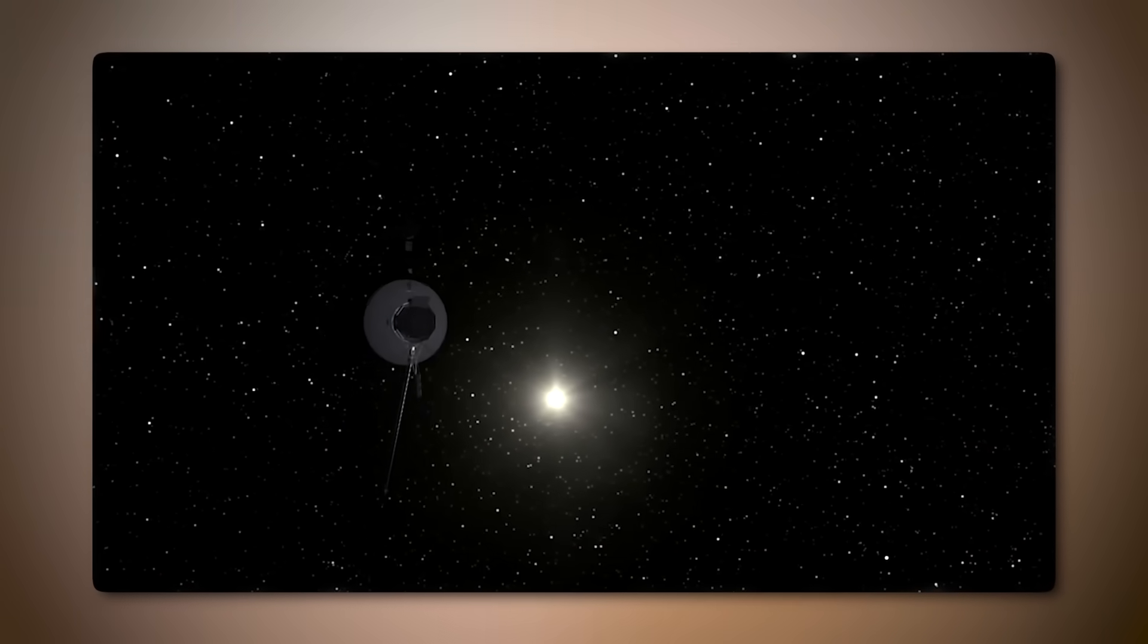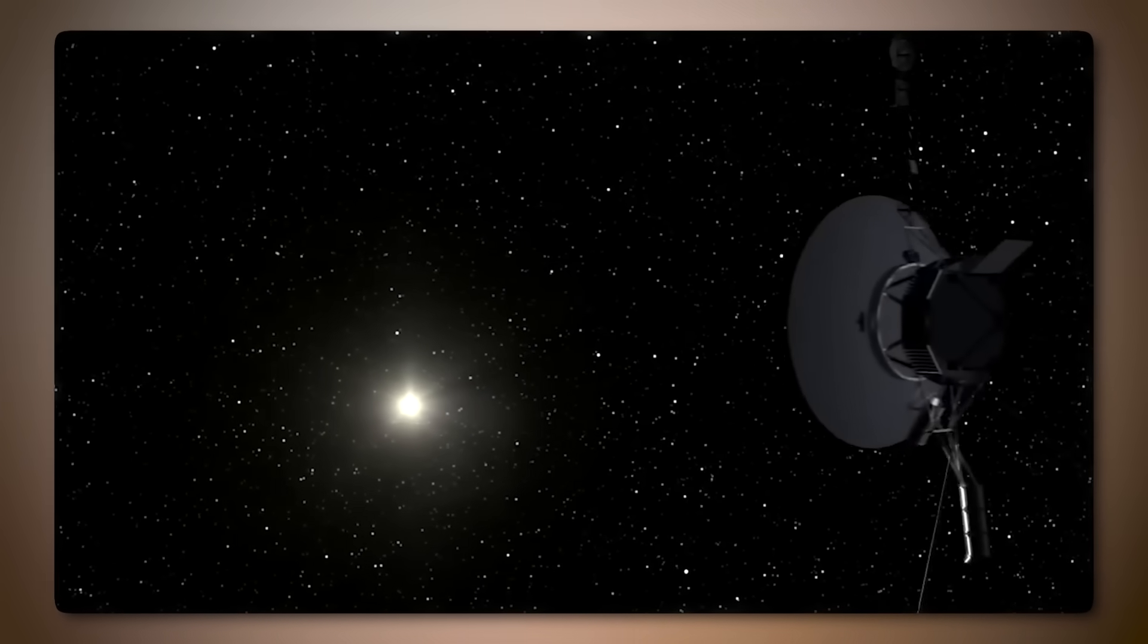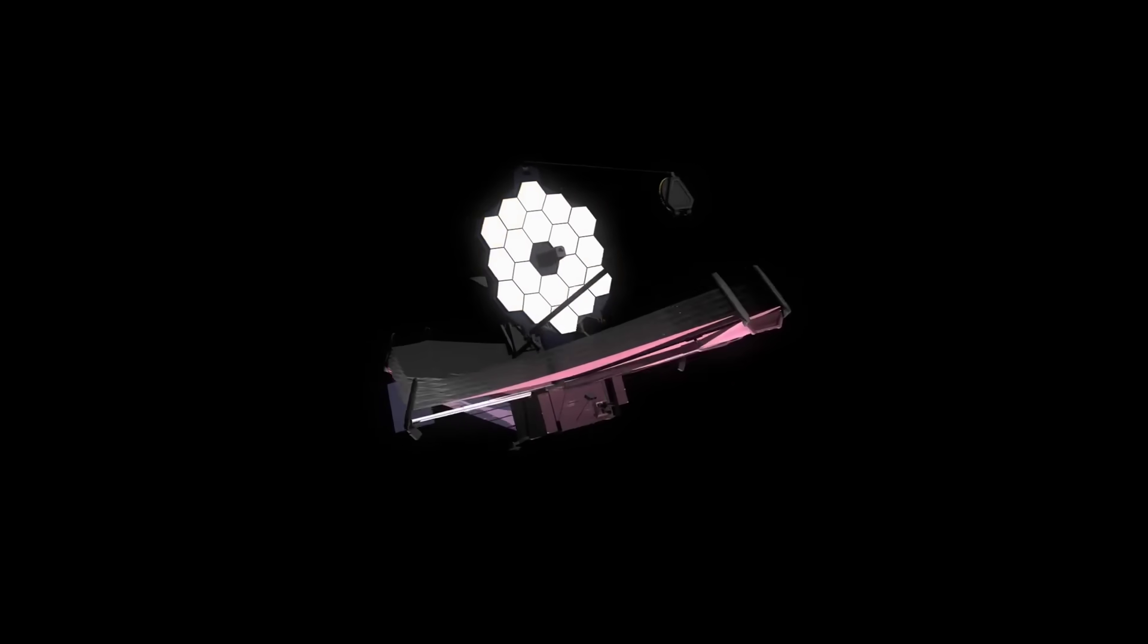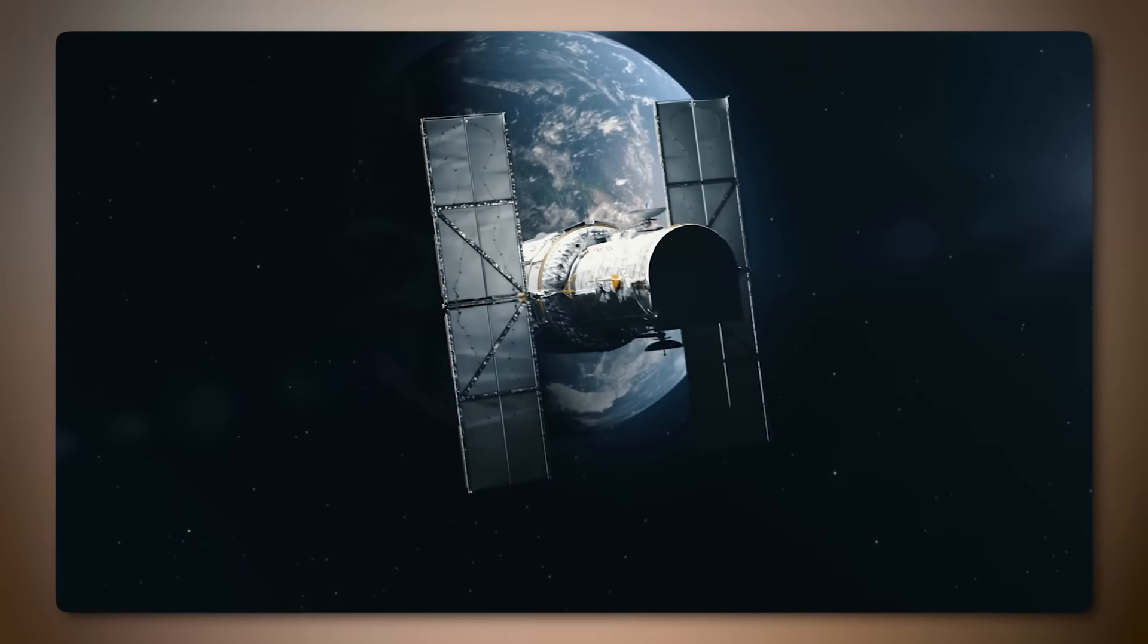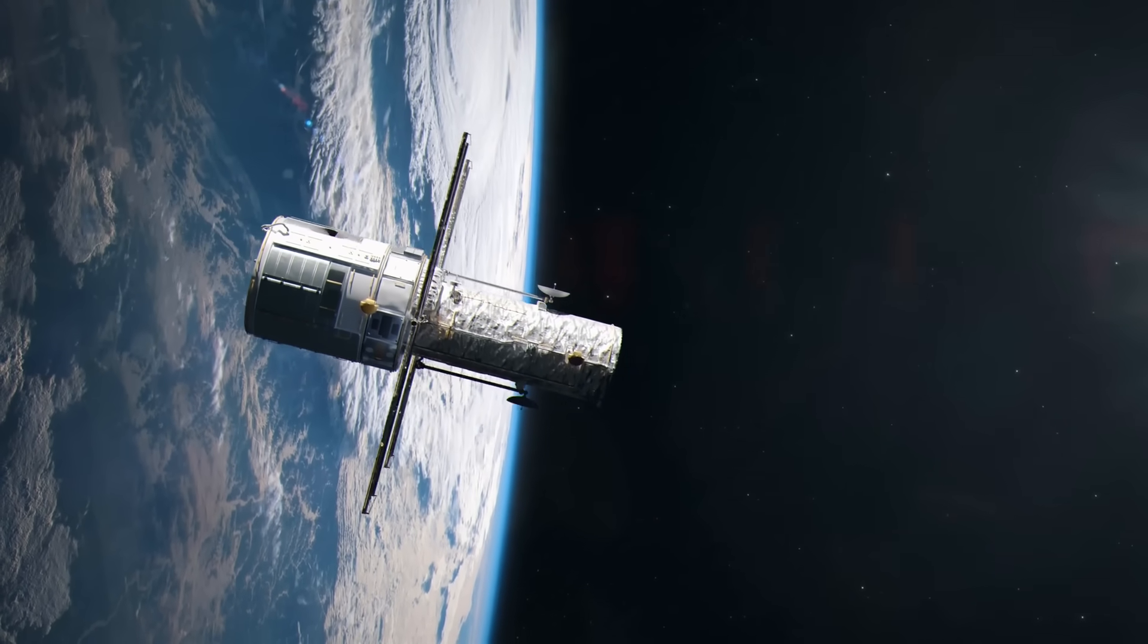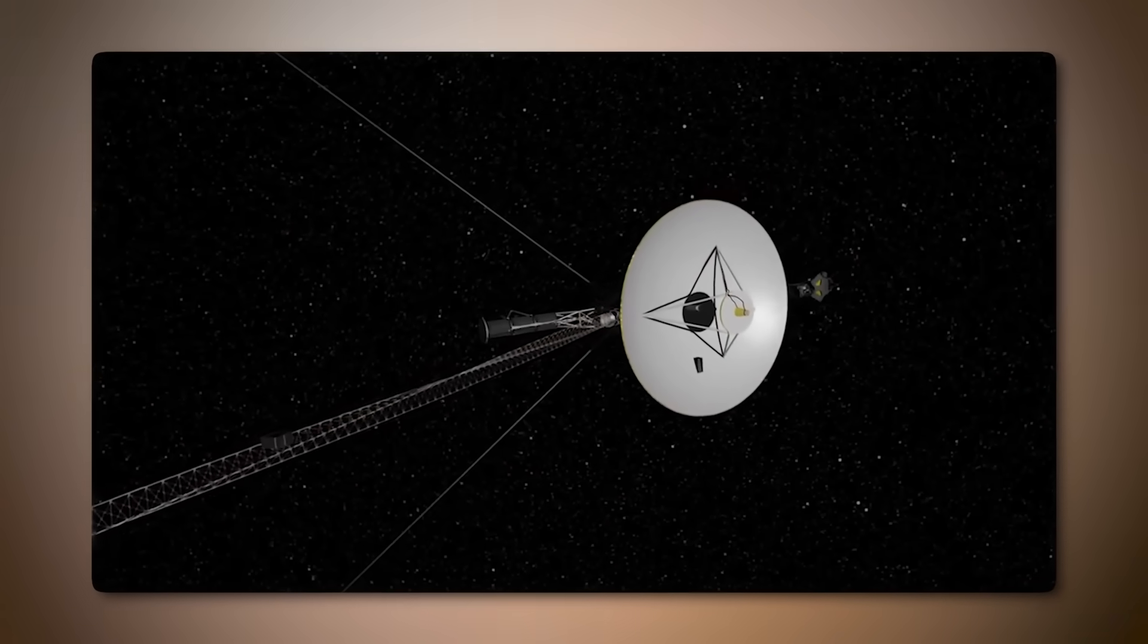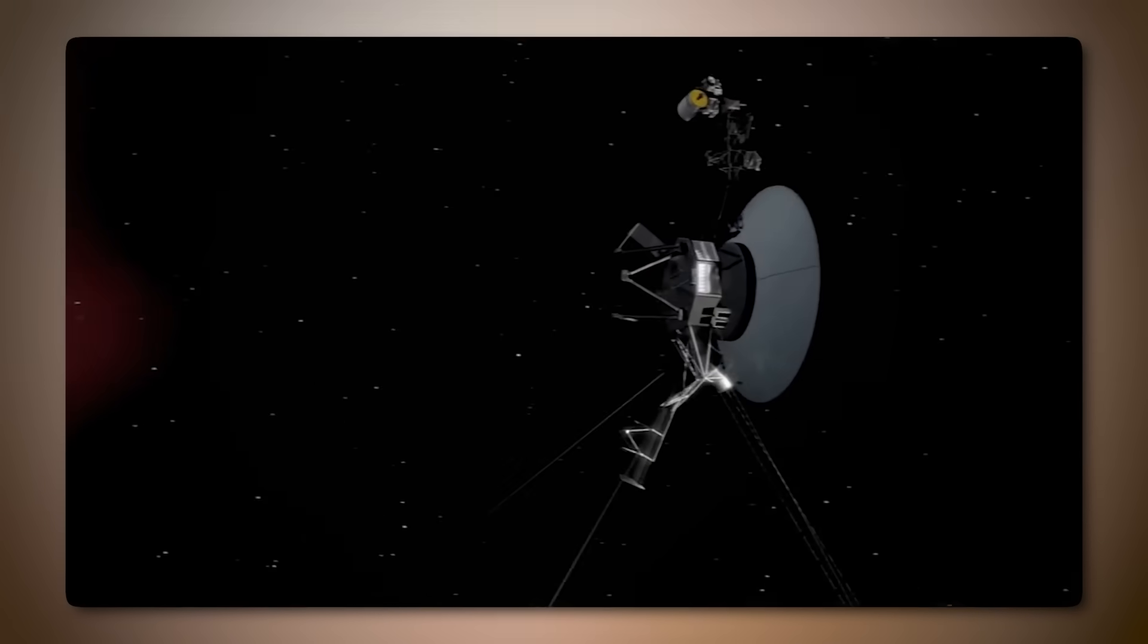Voyager's role, however, is more exploratory and localized, focusing on in-situ measurements of the interstellar environment. JWST and Hubble use state-of-the-art imaging and spectroscopy, while Voyager's instruments were designed primarily for solar system exploration, with less emphasis on imaging and more on magnetic fields, cosmic rays, and plasma interactions. Both Hubble and JWST are expected to operate for decades but within close proximity to Earth. Voyager, however, has ventured into a region no other probe has reached, creating a legacy of solar and interstellar science that will outlast its power reserves.